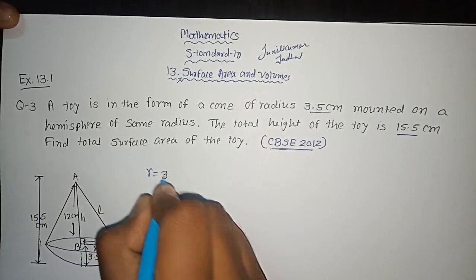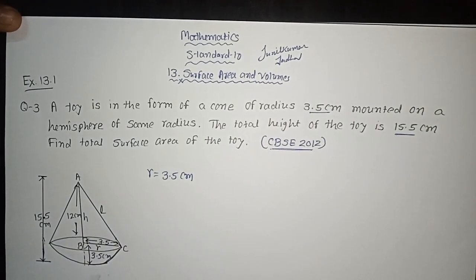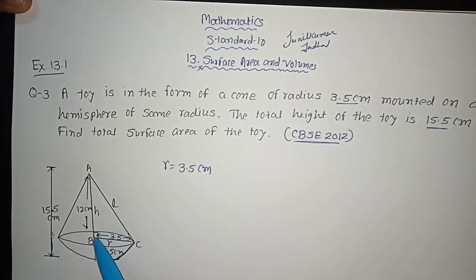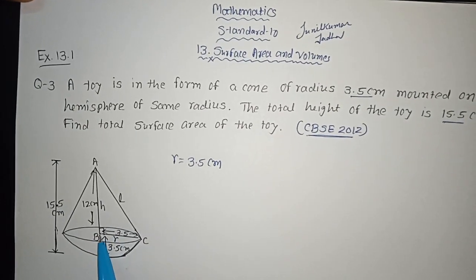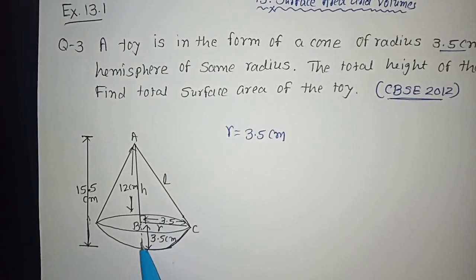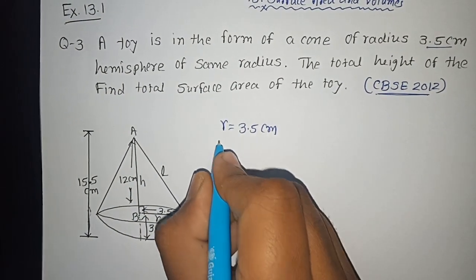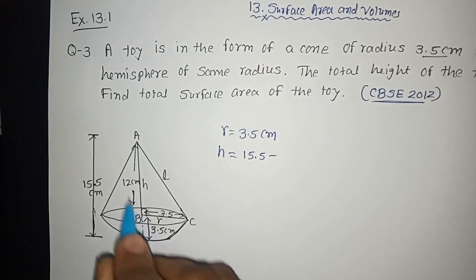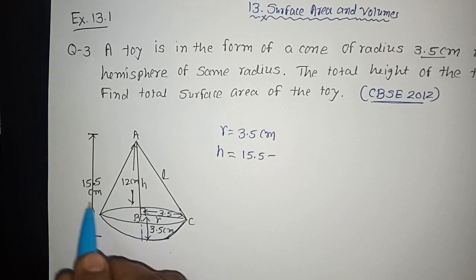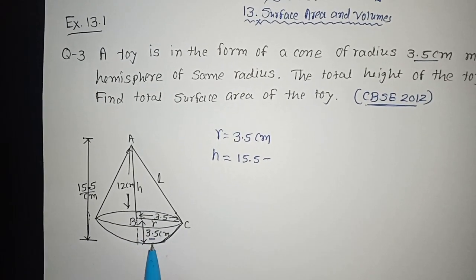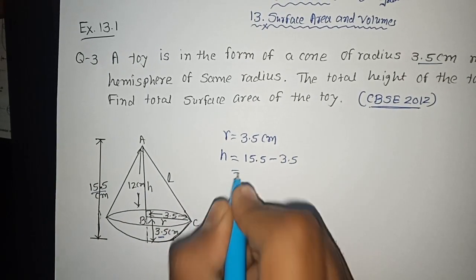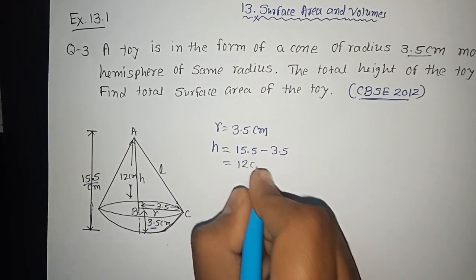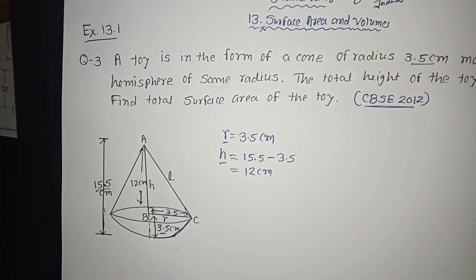I will write R is equal to 3.5 cm. First, I will note whatever values are given. The total height is 15.5 cm. To find the height of the cone, we subtract the radius of the hemisphere from the total height: h = 15.5 minus 3.5, so h equals 12 cm. That is the straight height AB.